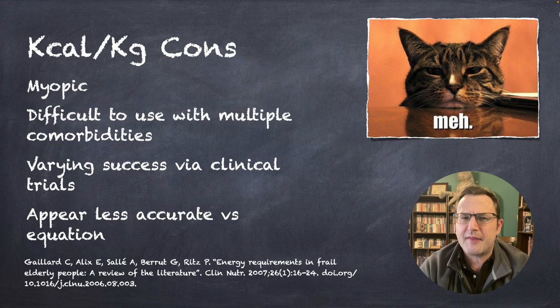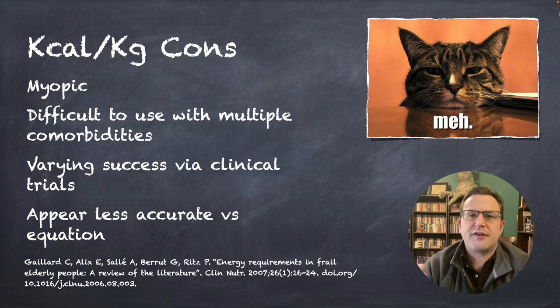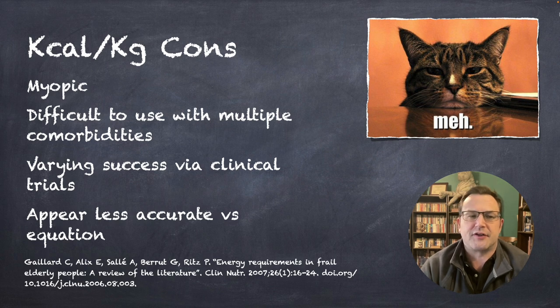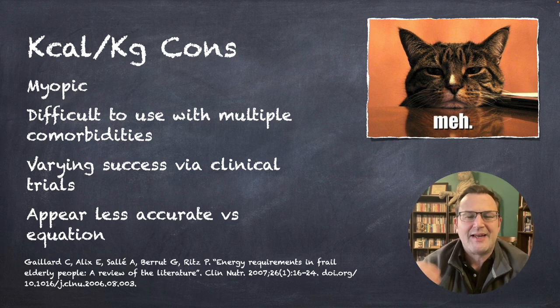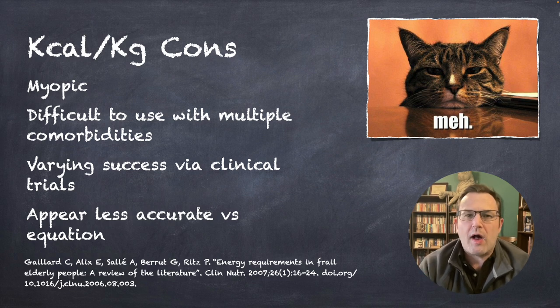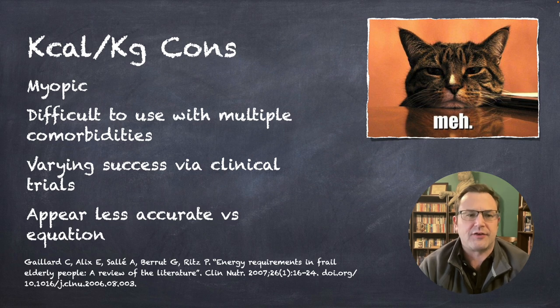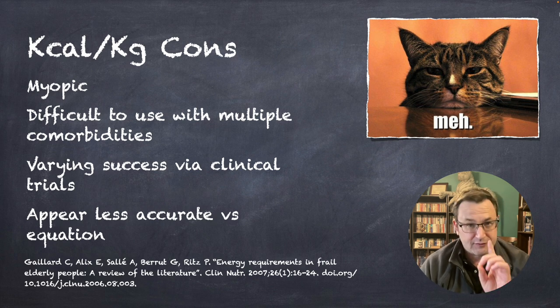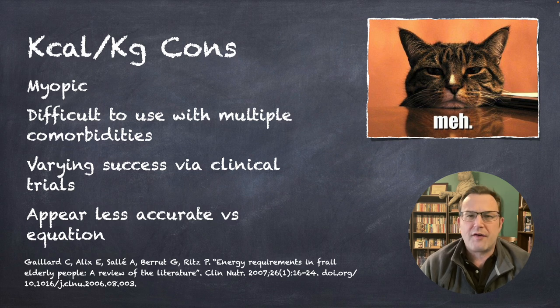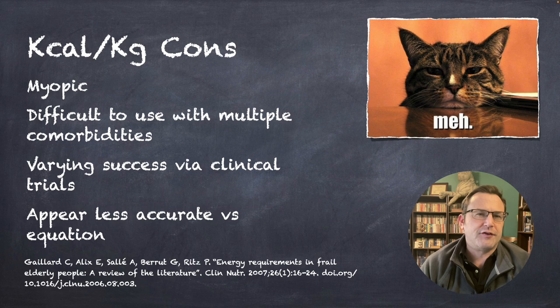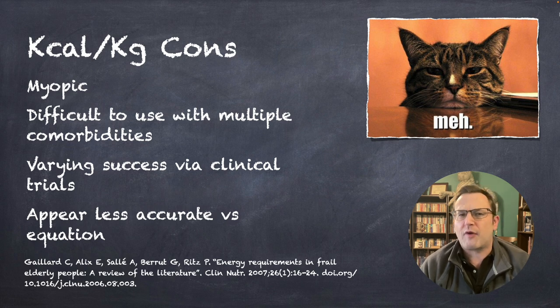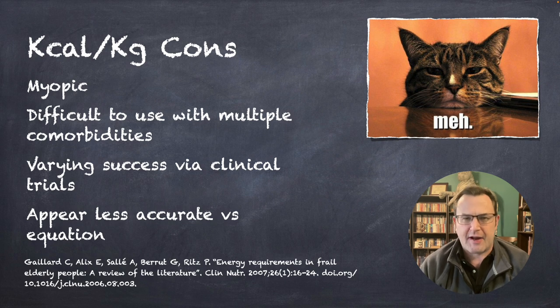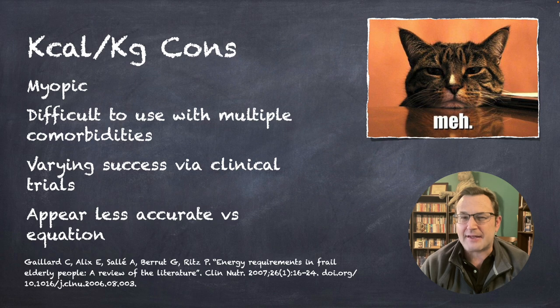So, what's bad about them? They're a bit myopic. Because they're focused on, say, someone on end-stage renal disease, on hemodialysis, that's it. If you have somebody with multiple comorbidities, it can be difficult to figure out how well that recommendation tacks on to that person's needs. They have varying success in clinical trials. I would argue there's more variation and less success with calories per kilogram versus an equation. You'll often see in literature an equation used, and then they will translate that into a range of calories per kilogram.